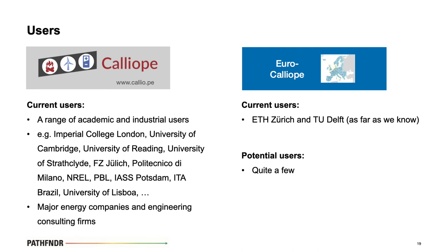Calliope itself is used by a wide range of people because it's freely downloadable. We're not fully aware of who all these people are, but we know it's used in many universities worldwide as well as in major energy companies and engineering firms. Euro Calliope, on the other hand, as far as we know is currently only used by ourselves. We think it could be useful for various other people, but we need to do a better job of documenting it and making it easier to use — so stay tuned until later this year when that work is done.